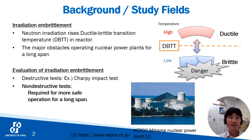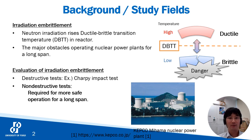This DBTT rising is a major operational problem because it extends the dangerous temperature ranges. This phenomenon is called irradiation embrittlement, and it is a major obstacle in the long-term use of nuclear reactors.